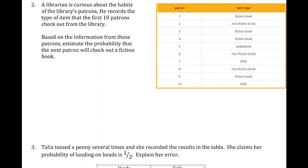A librarian is curious about the habits of the library's patrons. He records the type of item that the first ten patrons check out from the library. Based on this information, estimate the probability that the next patron will check out a fiction book.